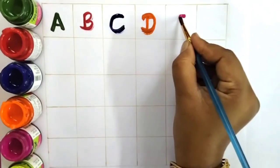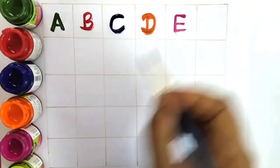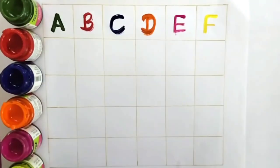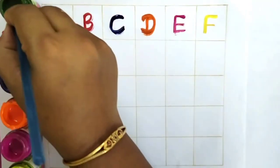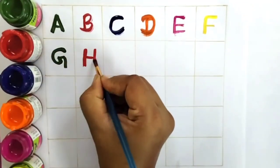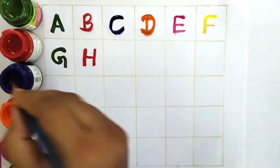D for Dog. Pink Colour E. E for Elephant. Yellow Colour F for Fish. G. G for Goat. H. H for Horse.